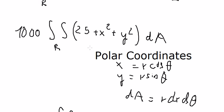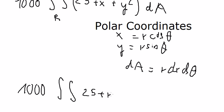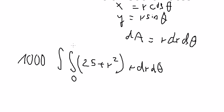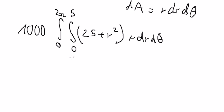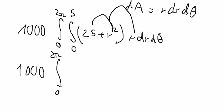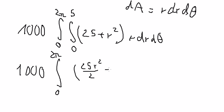Substituting into the integral, x squared plus y squared becomes r squared. The limits are r from 0 to 5 and theta from 0 to 2π. Evaluating the inner integral gives 25r squared over 2 plus r to the power 4 over 4.